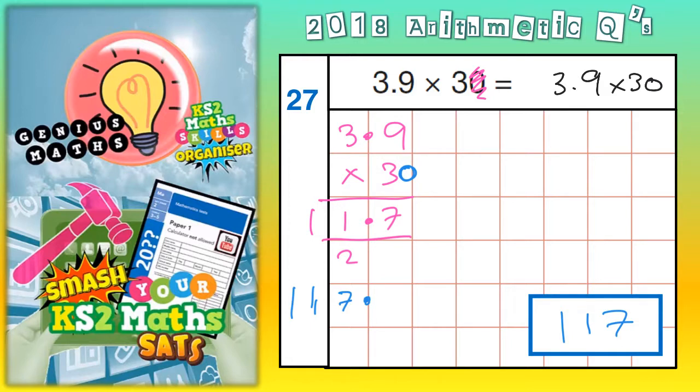What we could do now is cross out the decimal point, ignore the decimal point, and do 39 times 30.